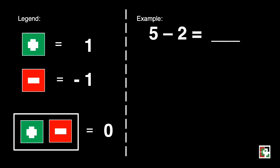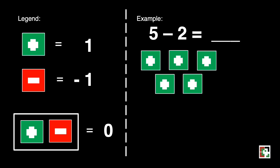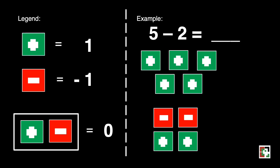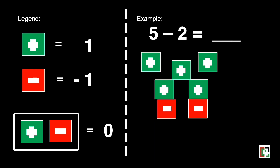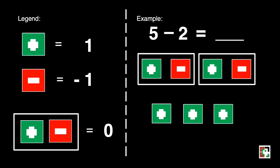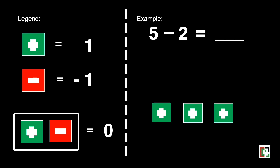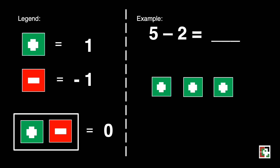Let's have this one again. 5 is represented by 5 green squares and we have 2 here. We'll have 2 zero pairs — 1 green and 1 red square — so let's have 2 sets of that. Since our subtrahend is a positive 2, we'll remove 2 green squares. This is not yet simplified because we still have 2 red squares, so let's find the zero pairs. We found 1 zero pair and another zero pair. What is left is 3 green squares. That is how we use a zero pair in subtracting integers.